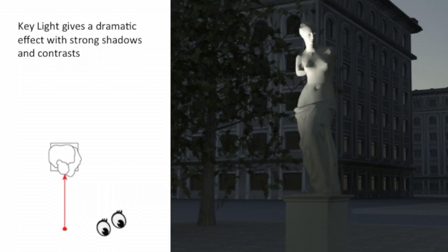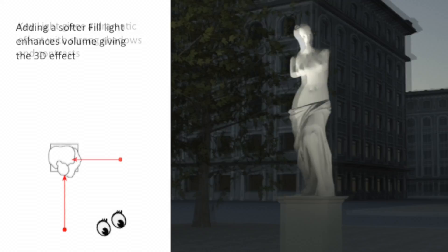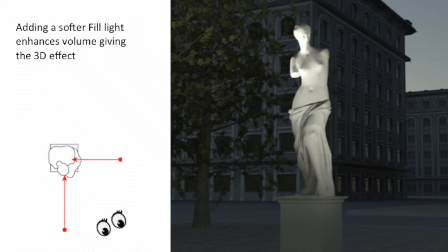We create more volume by adding in a fill light such as a wide beam blast with a frost filter to illuminate the rest of the statue.